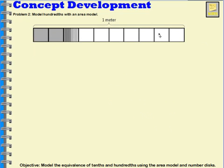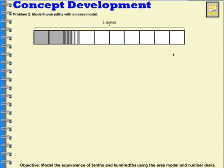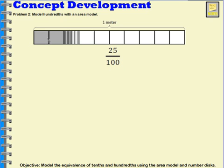Let's take a look at this one. If I wanted to know the amount shaded in, I would have to think about each part being separated into ten pieces. The meter has been separated into ten parts — ten of them in total. So here's two columns, that's ten, twenty, and then here's five more: twenty-five. So this is one way to represent twenty-five hundredths.